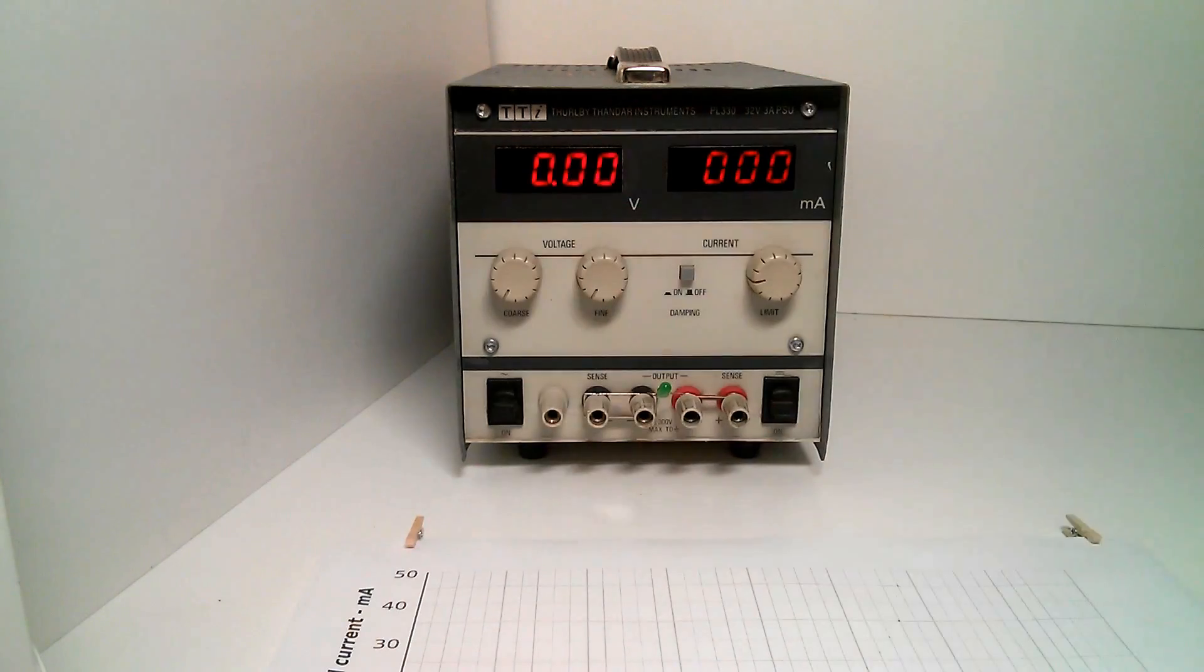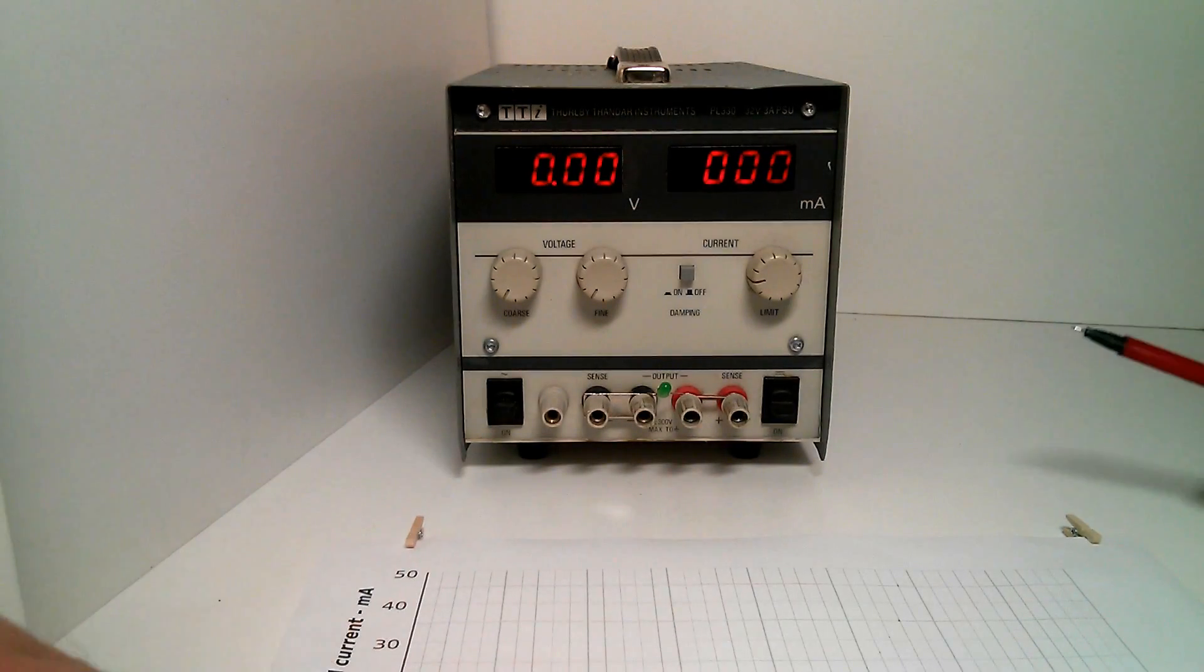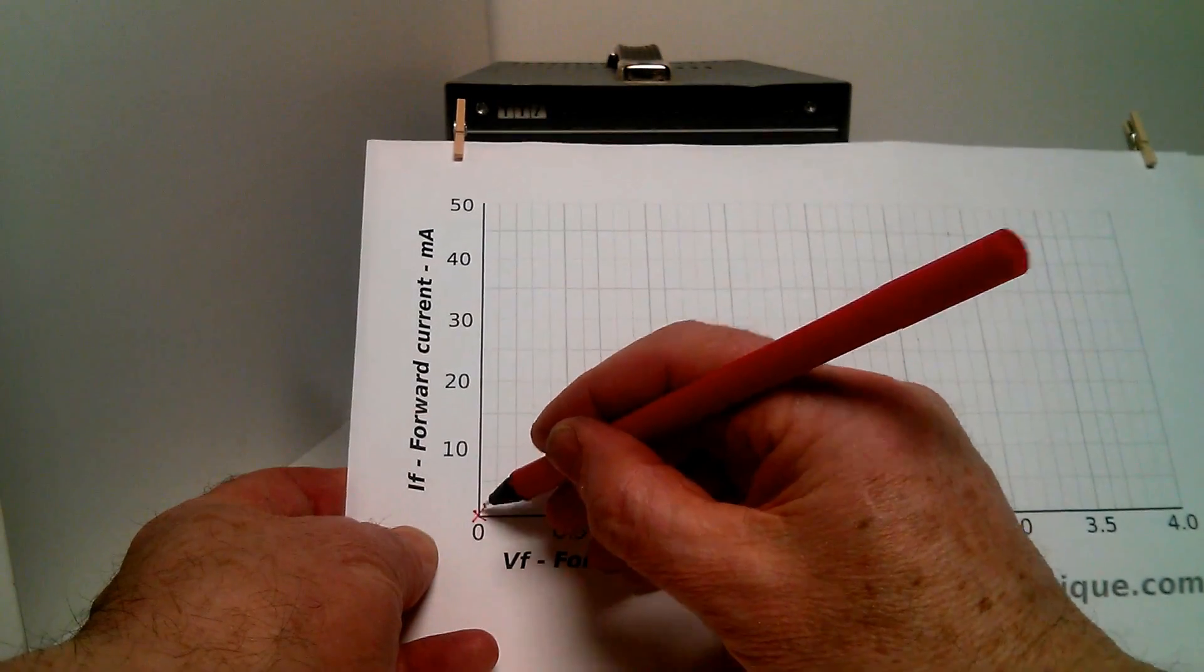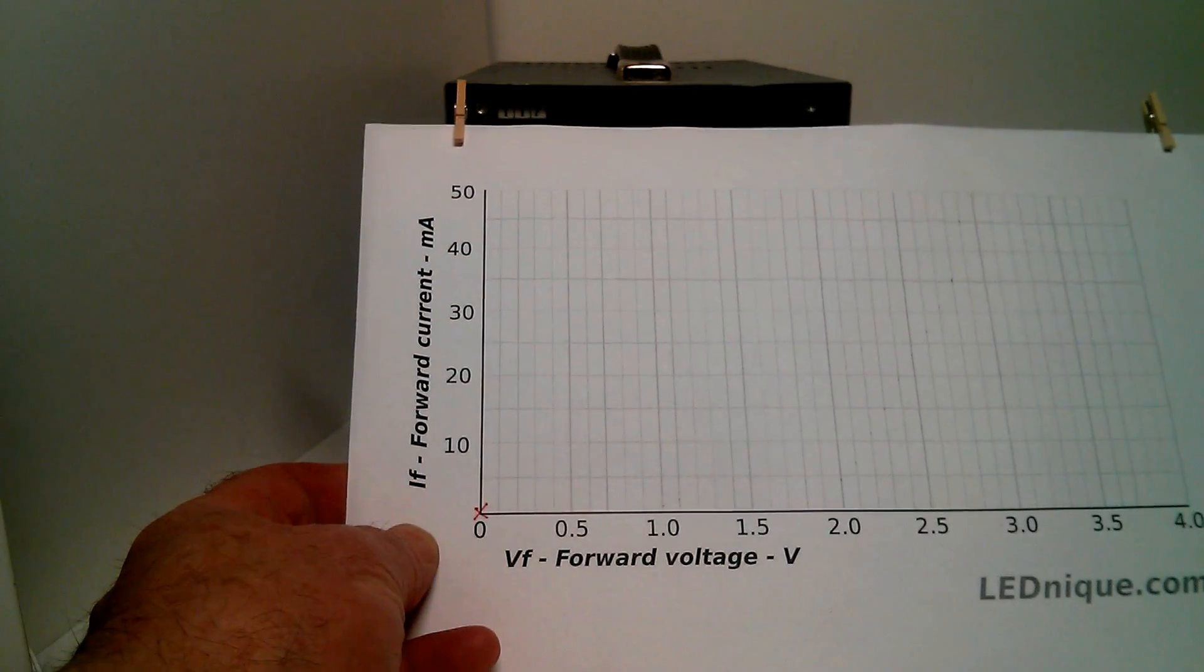So let's turn that down to zero. And at zero volts, we get zero current, as we'd expect. So we can start there and put in our first point on the chart.